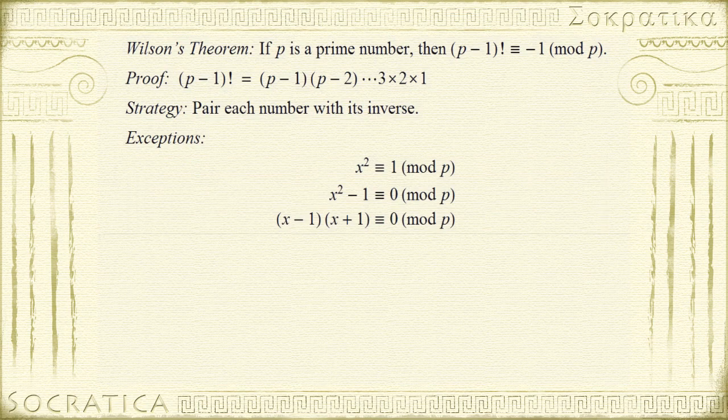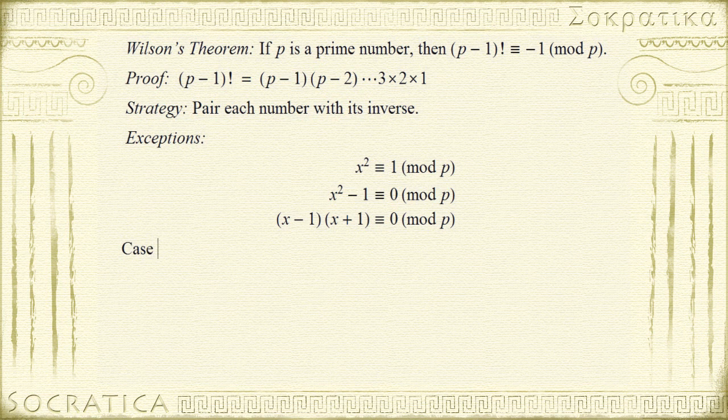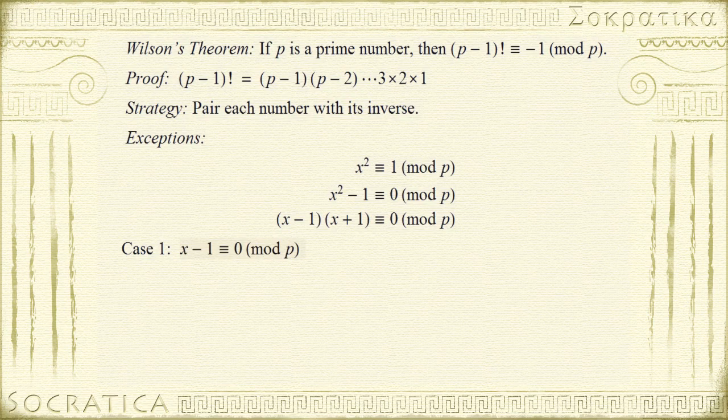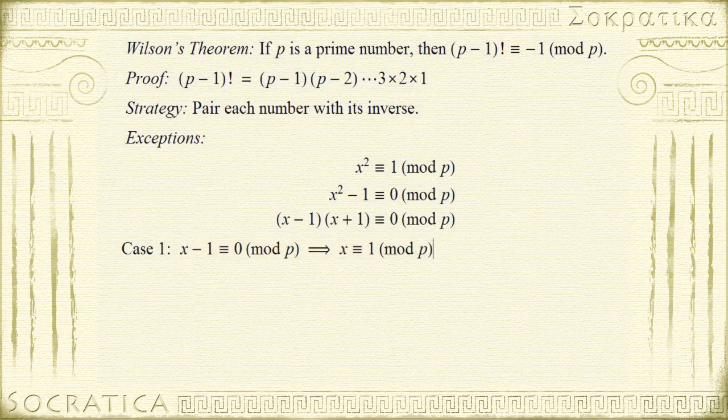And now we just solve this like we would in algebra. So now we just set each factor equal to 0. If x minus 1 is congruent to 0 mod p, that means x is congruent to 1 mod p. That's not a surprise. So 1 is its own inverse.